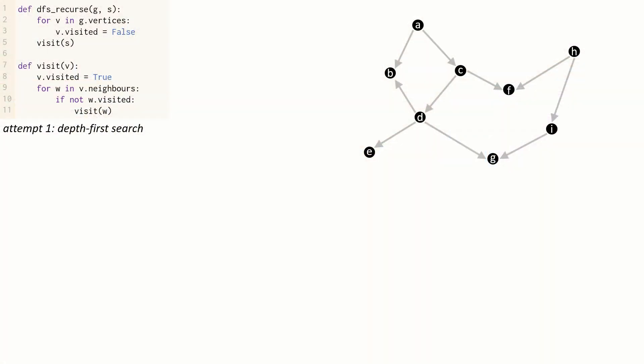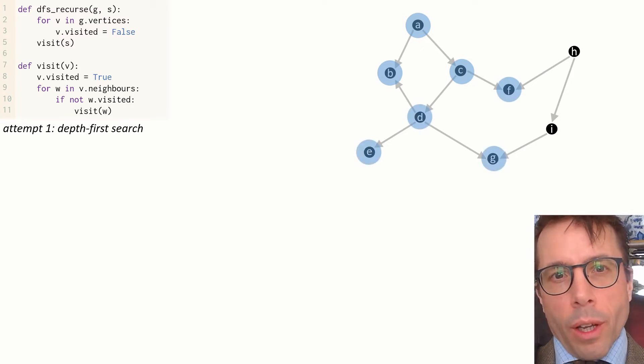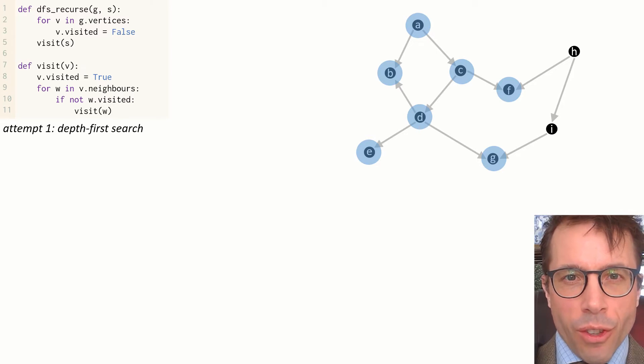We can be sure that all its descendants will come after it, so sounds like a good candidate for a total order. Let's try it and see what happens. Here's a graph, here's our depth-first search code from the beginning of the course, and let's run it. We need to pick a start vertex to run the algorithm from - let's say we'll pick A, and then we just visit all the vertices we can reach. And then we realize: hold on, this code doesn't even visit the entire graph.